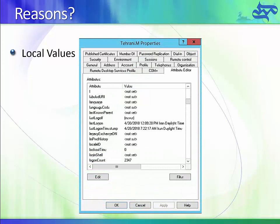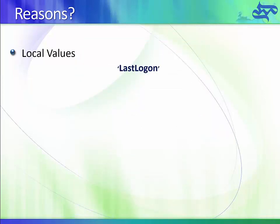Let me show you an image. We have the properties of a user account in our Active Directory database, and within those properties there is a famous tab called Attribute Editor. This shows all the information stored for our user account — attributes like language code, last logon time, logon count, lockout time, and things like that. There is an attribute called lastLogon.